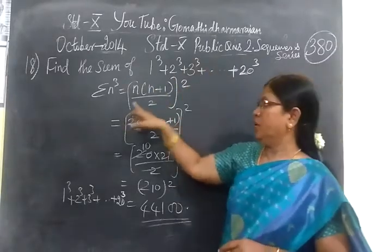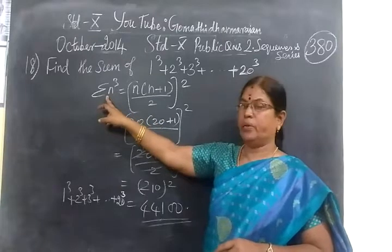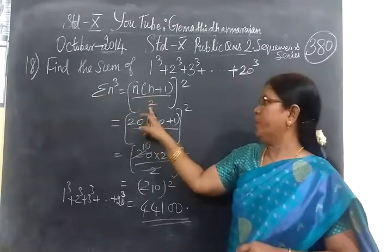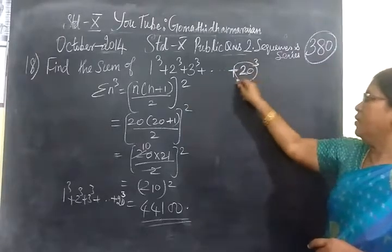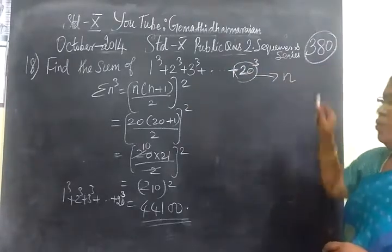The formula is sum of n cubed equal to n into n plus 1 by 2 the whole square. N is the last term.